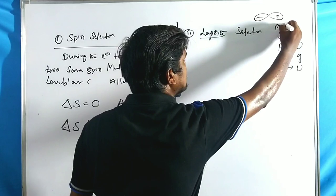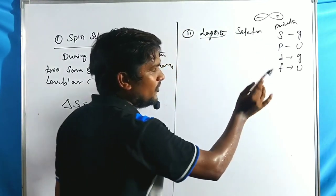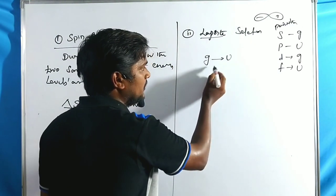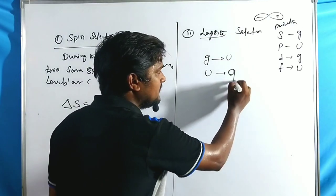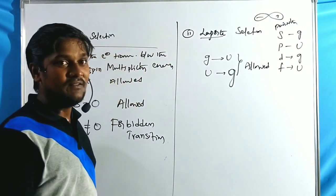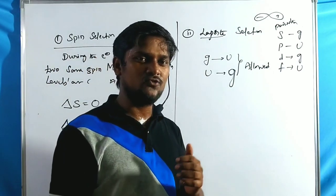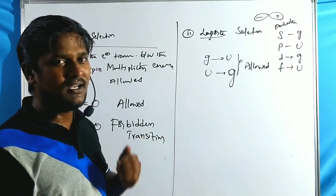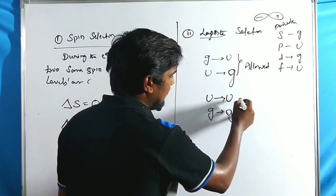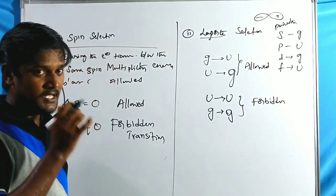Based on the parity rule, if electron transition takes place from S to P, P to D, or D to F — that means g to u, u to g, or g to u — those are allowed transitions. If transitions occur between the same parity (g to g, or u to u), those are forbidden transitions. Transitions from center of inversion to non-inversion center, or vice versa, are allowed; same-parity transitions are forbidden.